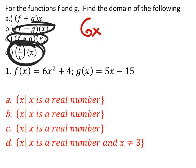So we got 6x squared—that's a bad squared—plus 4 over 5x minus 15.